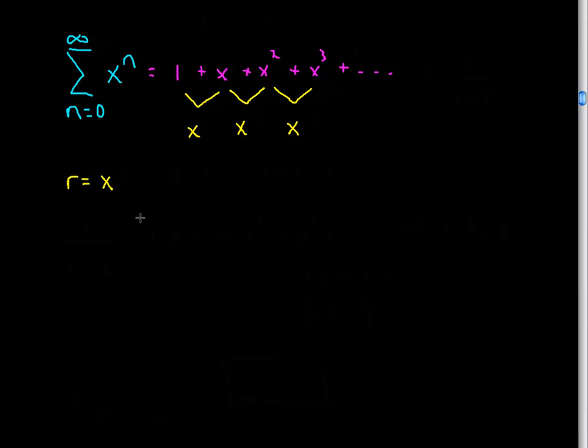Now our pre-calc teacher taught us that if our r value, if the absolute value of our r value is less than 1, if that condition is met, then we can say that this series, this infinitely long series, is actually equal to the first term of the series, which in this case is 1, divided by 1 minus that common ratio. Let's just fill in what all of these are. Your very first term of this series is 1, and your common ratio is x. So that kind of looks like a function to me.